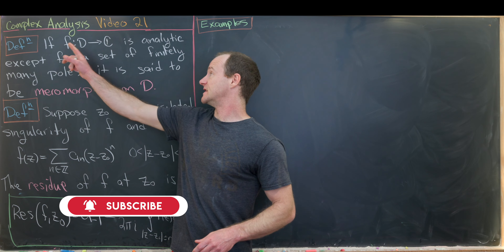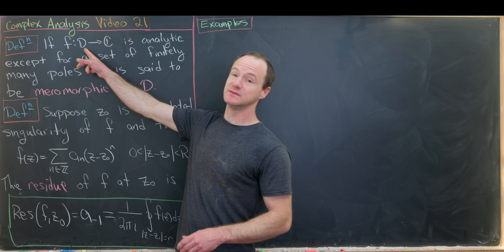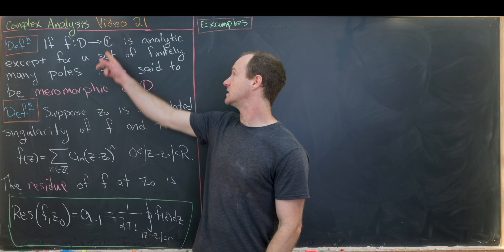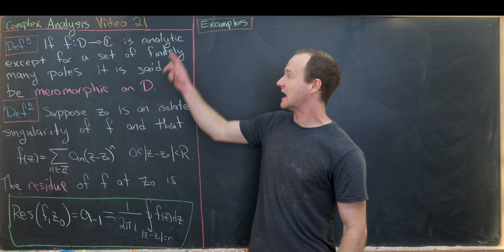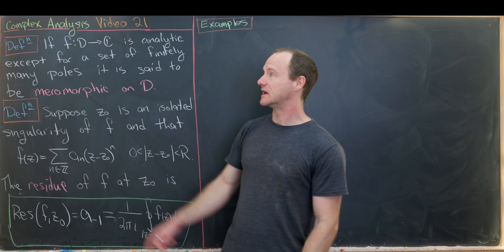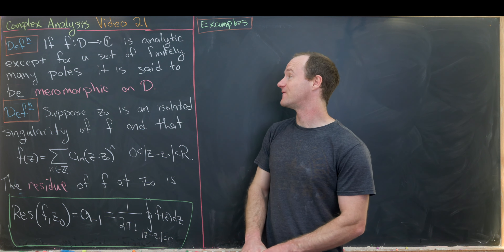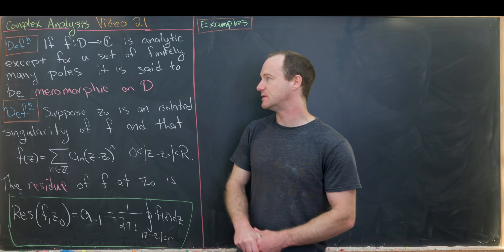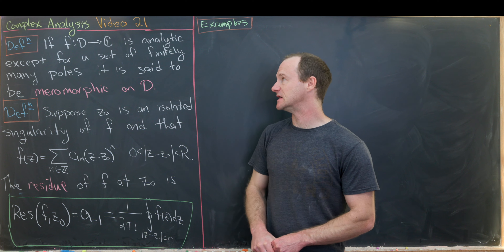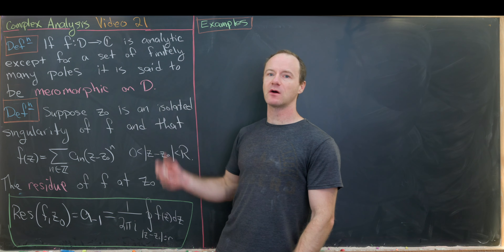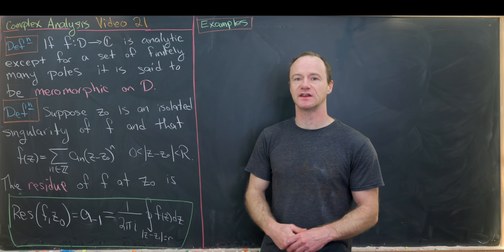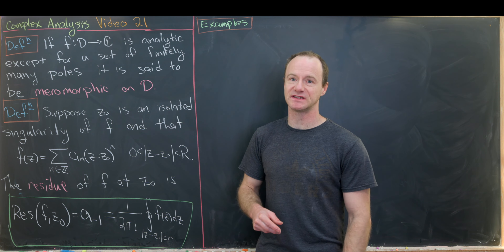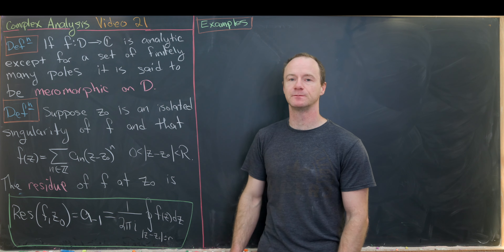If f is a function from d, where d is a domain in the complex plane to the complex numbers, and it's analytic except for a set of finitely many poles, then it is said to be meromorphic on d. As you've probably noticed, we've been looking at functions that are meromorphic on domains for several videos, but we just didn't have a word for it, and now we do.